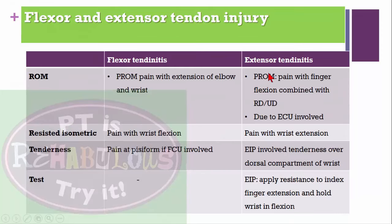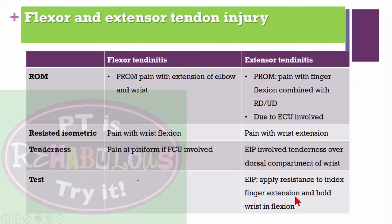Range of motion assessment for extensor tendinitis: passive range of motion shows pain with finger flexion combined with radial or ulnar deviation. If extensor carpi ulnaris is involved, resisted isometric test is positive with pain in wrist extension. If extensor indicis proprius is involved, tenderness is over the dorsal compartment of the wrist. The special test applies resistance to index finger extension while holding the wrist in flexion.